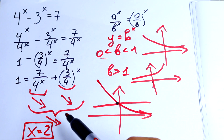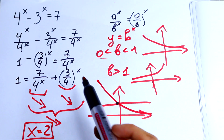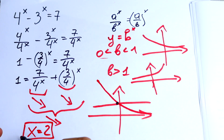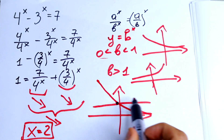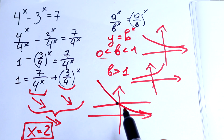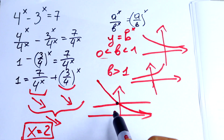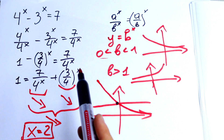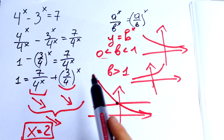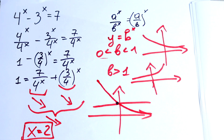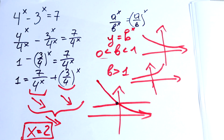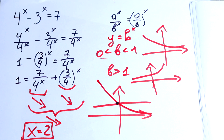We won't have 2, 3, or more roots — with this proof we have only one solution, because a decreasing function and a constant intersect at exactly one point when they do intersect at all. So one root, and x equals 2. Write your answer in a comment, write your questions, thank you for watching and see you in the next video.